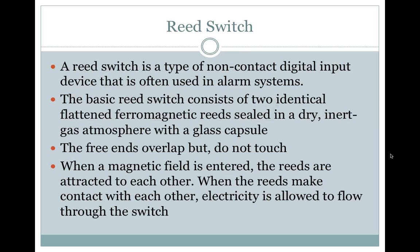Reed switch. A reed switch is a type of non-contact digital input device that is often used in alarm systems. The basic reed switch consists of two identical flattened ferromagnetic reeds sealed in a dry, inert gas atmosphere within a glass capsule. The free ends overlap but do not touch. When a magnetic field is applied, the reeds are attracted to each other, and when they make contact, electricity is allowed to flow through the switch.